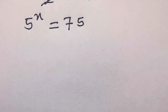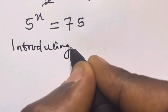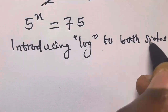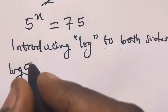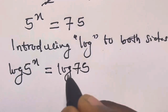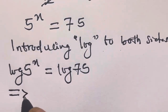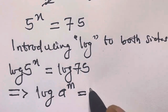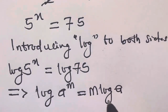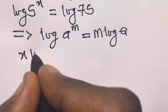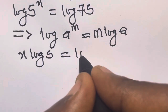From here we introduce log to both sides. So we have log of 5 raised to the power x equals log 75. Recall that log of a raised to the power m equals m times log a. Applying this, x will come forward and we have x log 5 equals log 75.